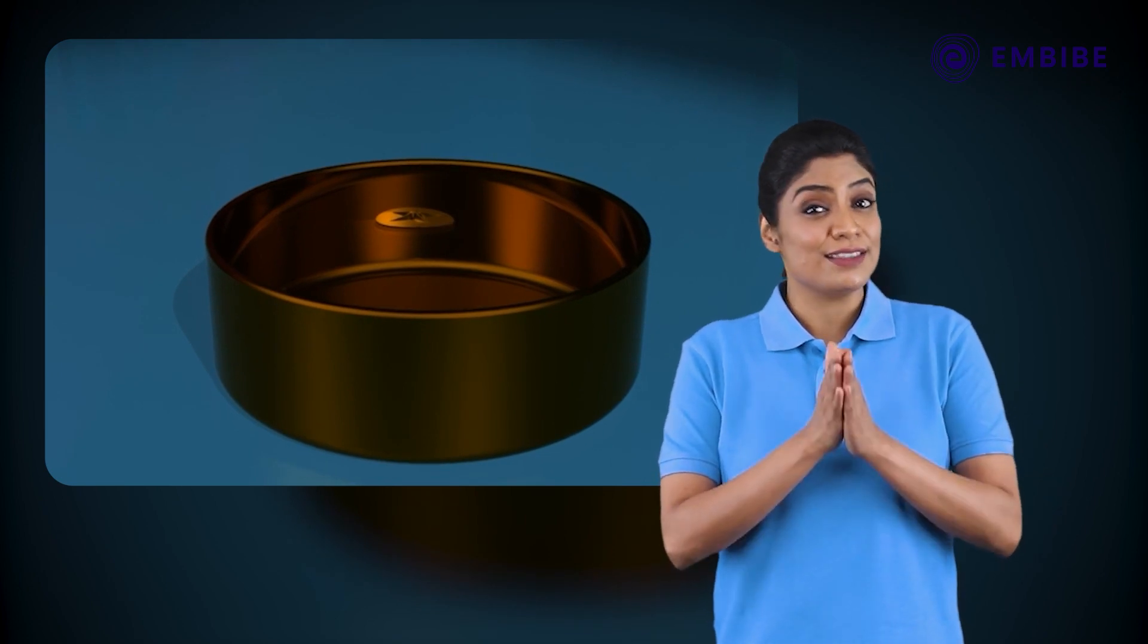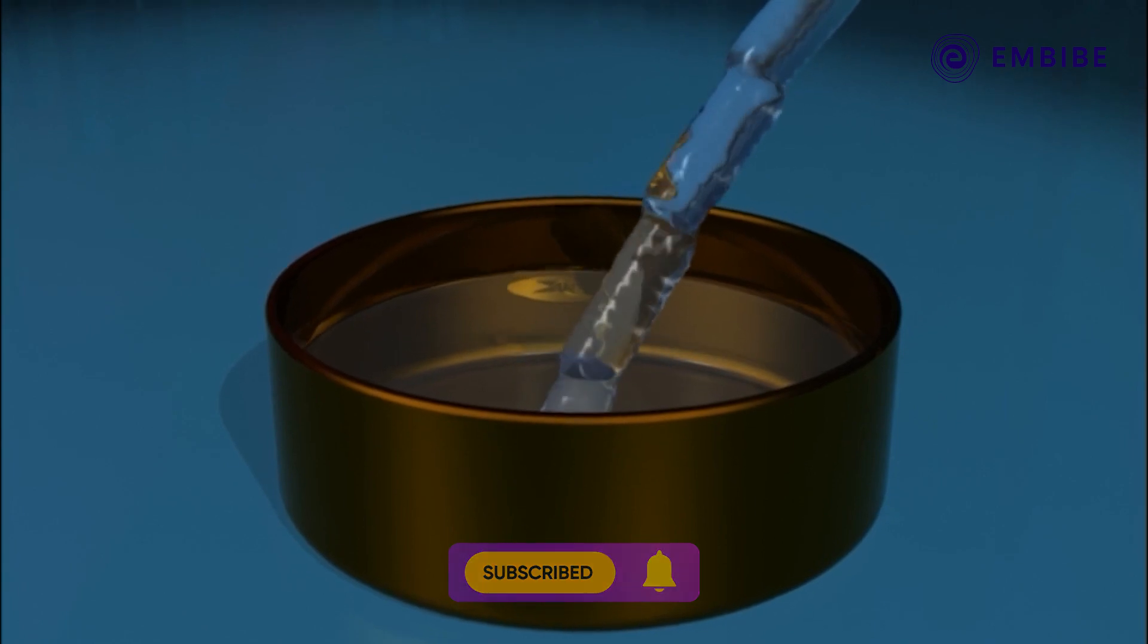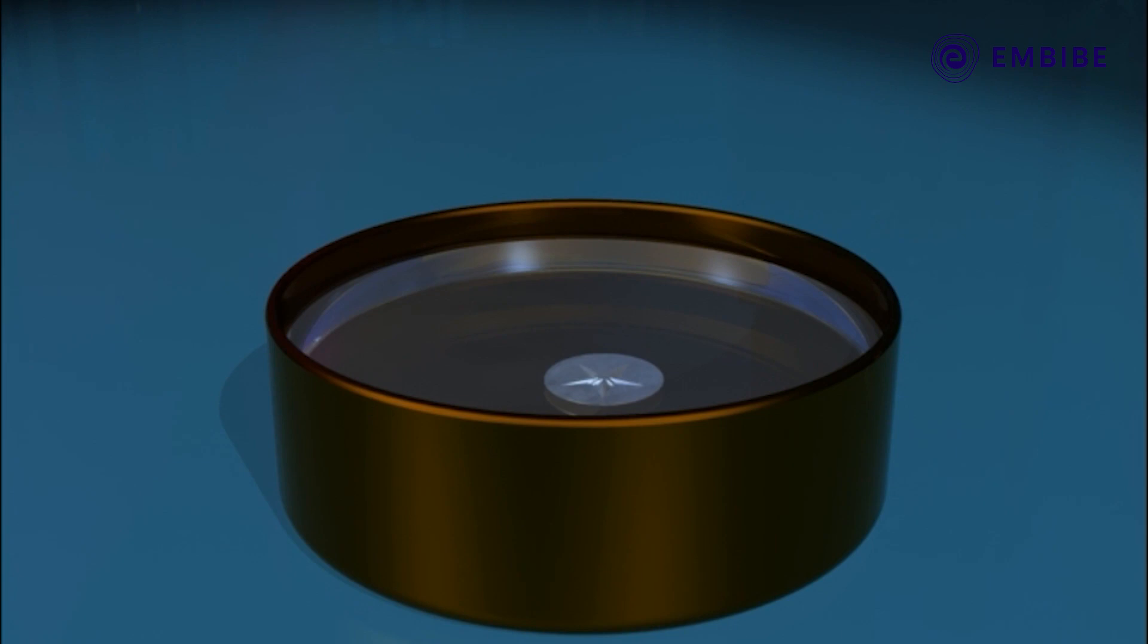Take an opaque vessel and place a coin at the bottom. Move your head slowly away from the vessel till the coin disappears from the side. Keep your head in the same position and ask your friend to pour some water into the vessel. Observe the coin becoming visible.